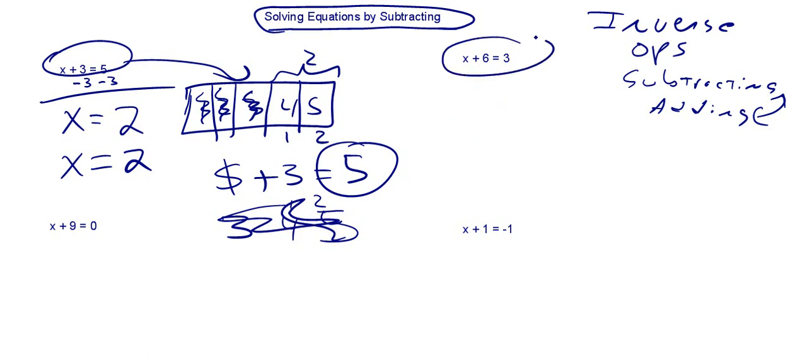I always like to think about what's happening mathematically. So here, you've got x plus 6 is equal to 3. So what's our inverse operation of addition? It's subtracting, so let's go ahead and subtract 6 from both sides.